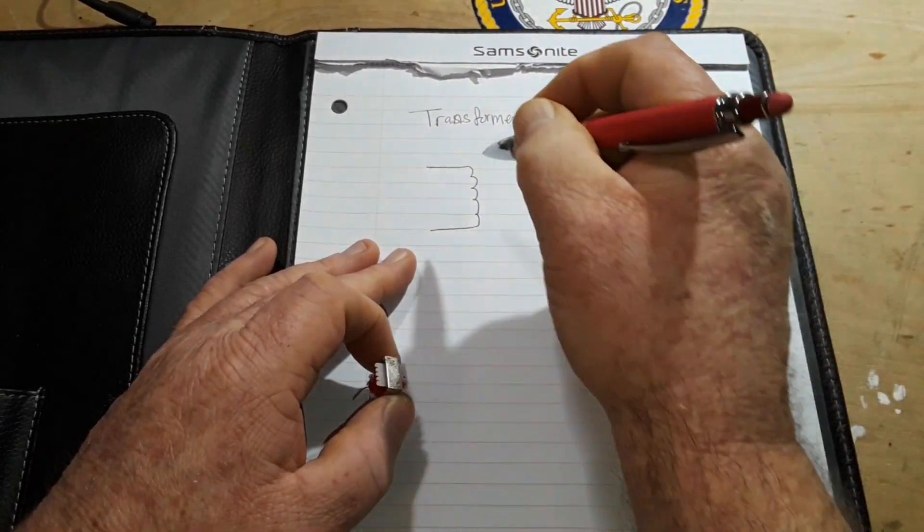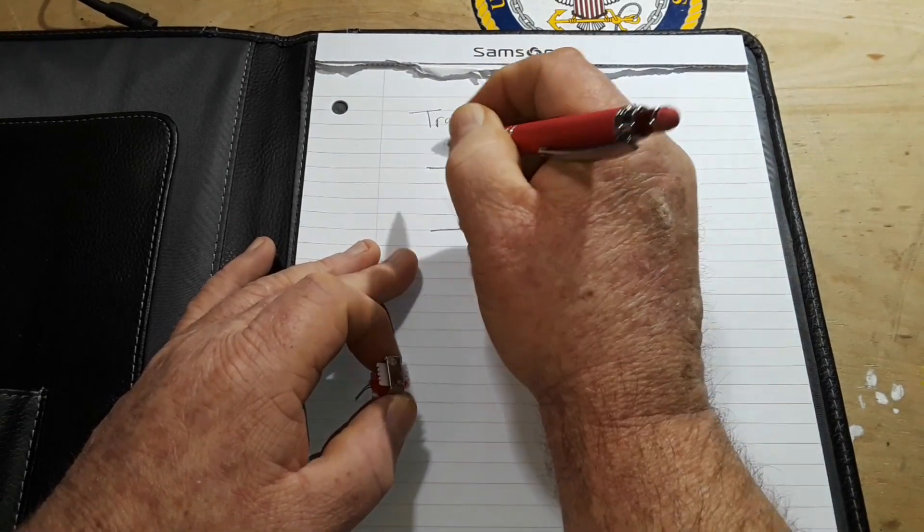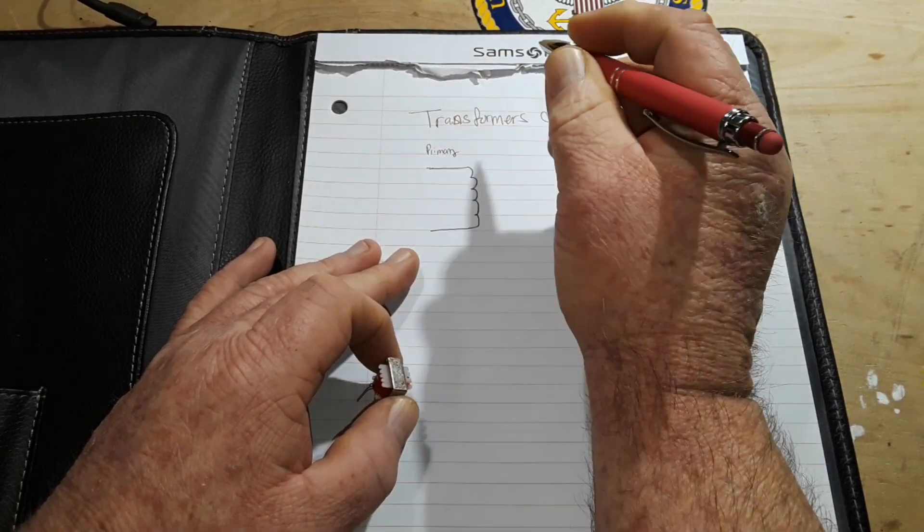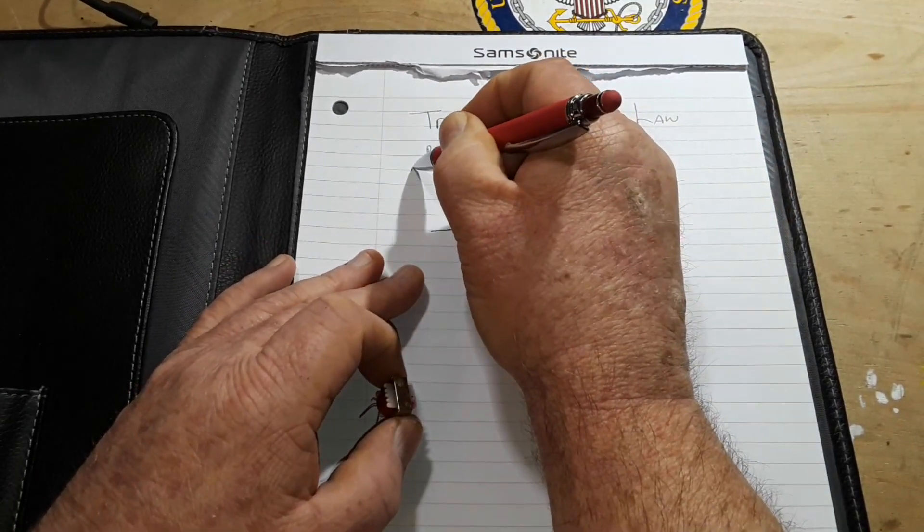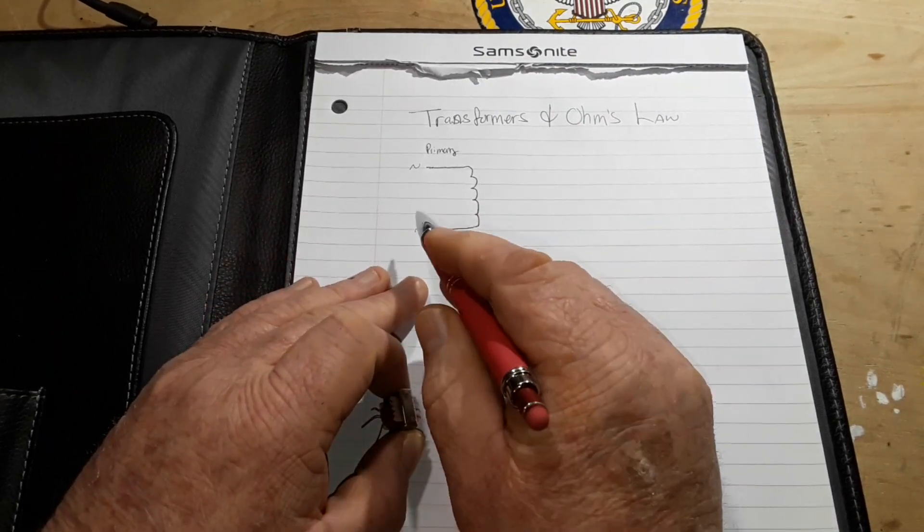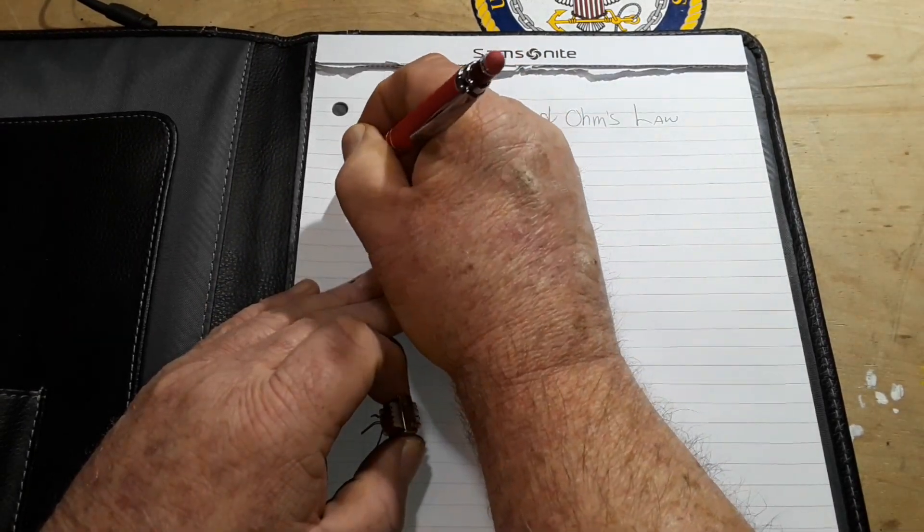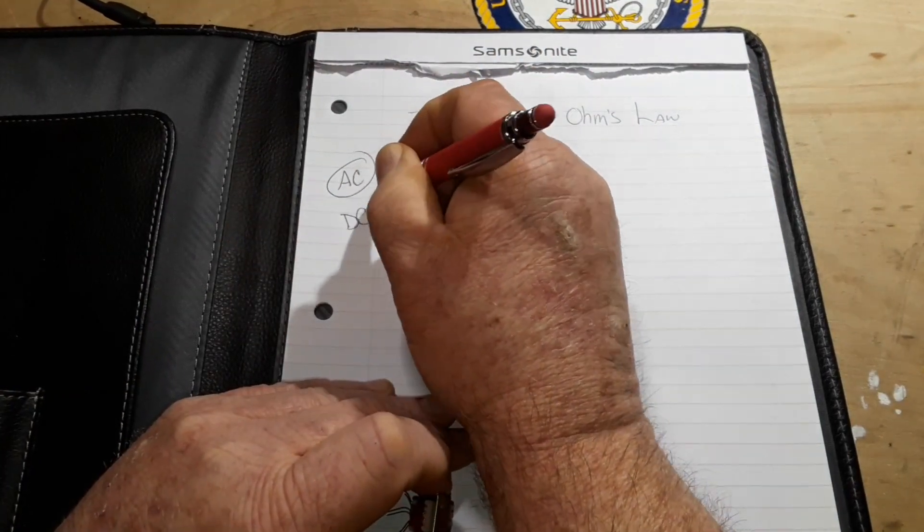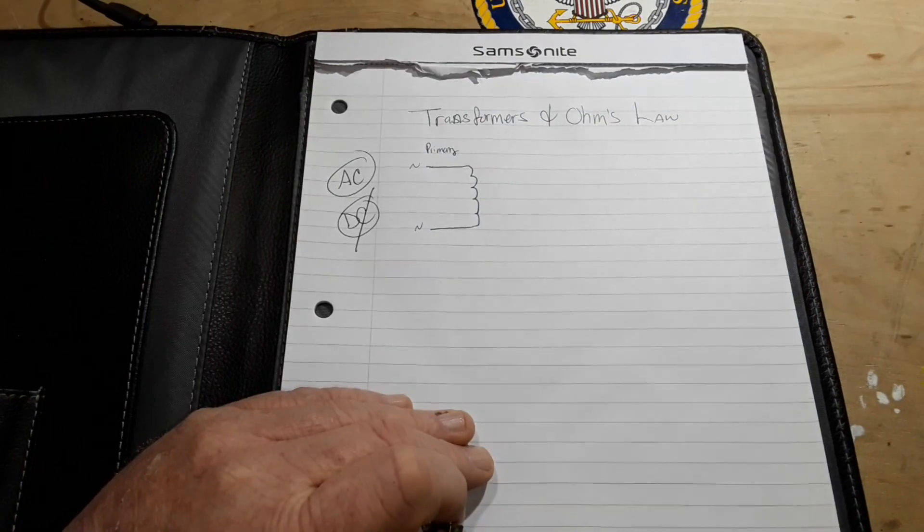So this is what we'll call the primary side. And our AC is fed in here. And yes, it must be AC. That is a key component. It only works with AC. No DC.